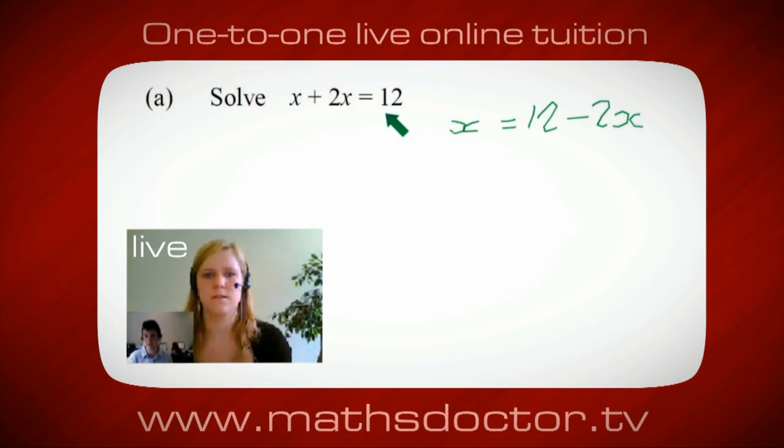Okay. So, a lot of the time, we want to get x by itself. But, what we want to do first is get all of these x's together. So, can you see anything we can do with this? Get all these together in one place. Oh, okay. It's 3x, isn't it?